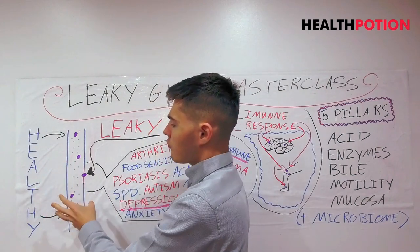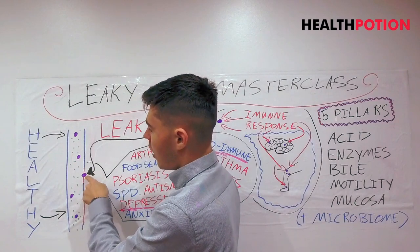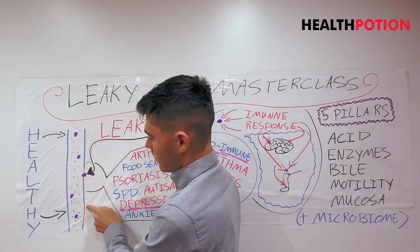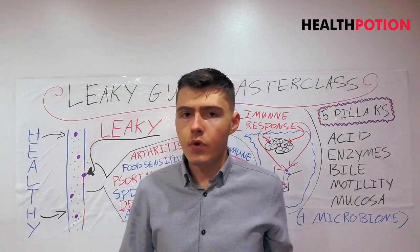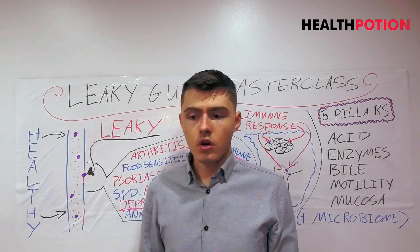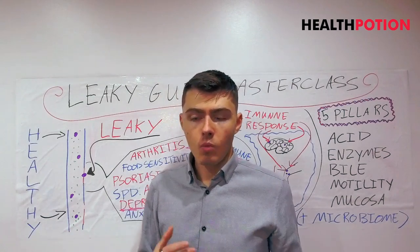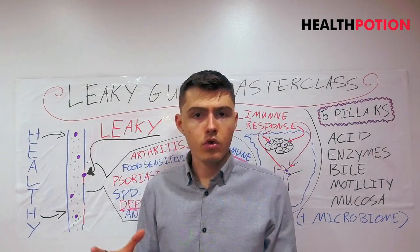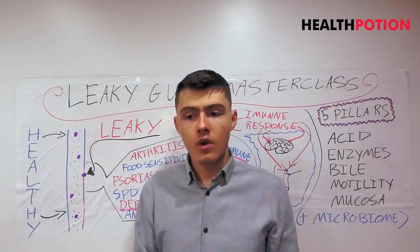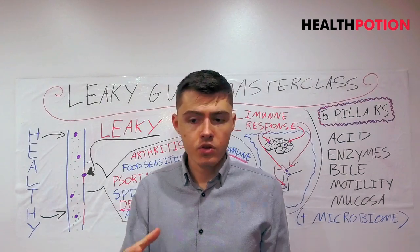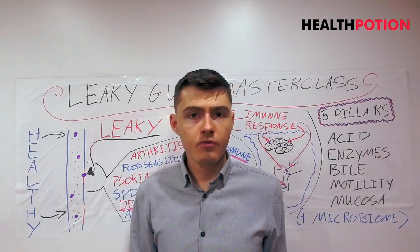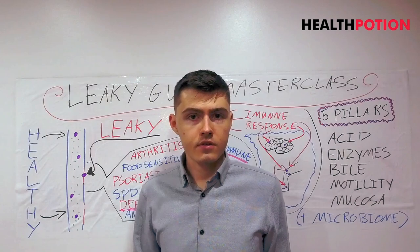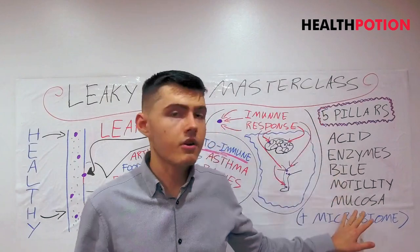But when we've got increased permeability, as you can see here, we've got a hole in the gut. These purple dots represent food that hasn't been fully broken down. This could be because you've got weak stomach acid and can't break all of your proteins down into amino acids, or maybe you're not producing enough digestive enzymes to break these foods down quickly enough. There are a couple of problems that can cause this to occur.